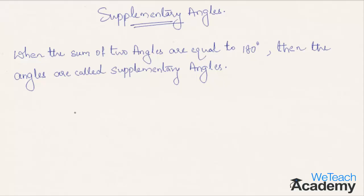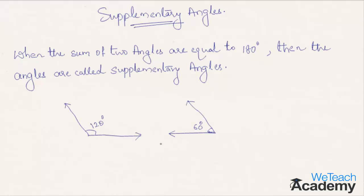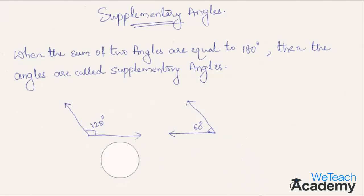Let me explain with a diagram. Here in this figure we have a pair of angles, and the sum of these angles is 120 degrees plus 60 degrees, which equals 180 degrees. Hence this pair of angles are called supplementary angles. The supplement of 120 degrees is 60 degrees, and the supplement of 60 degrees is 120 degrees.